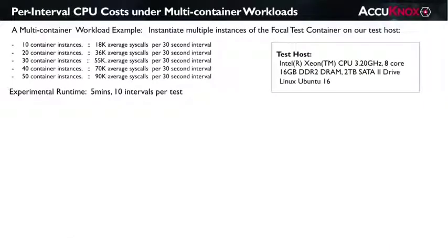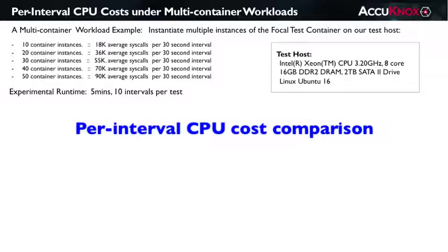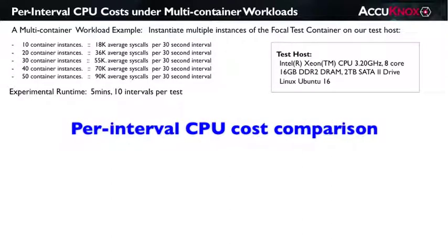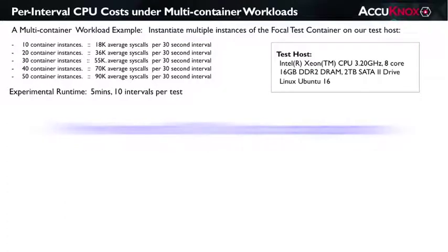I'm going to show a per-interval CPU cost comparison under different workloads. PERF was used to compute just the CPU cycles involved in locally processing and publishing the forensic data to Elasticsearch, per 30-second interval. I'm also driving the workloads in a manner that is similar to how it was trained, so the VAE is consistently finding the apps to be operating in a stable manner. I'll talk about the alternative next.